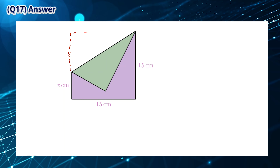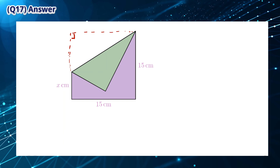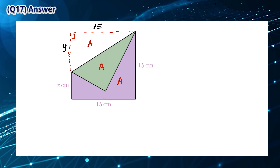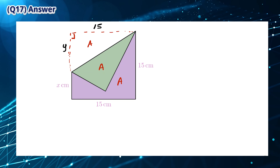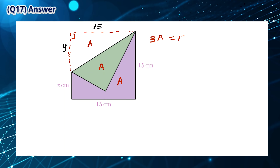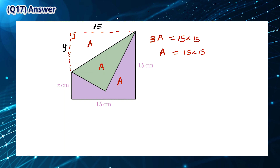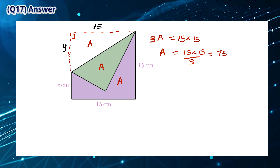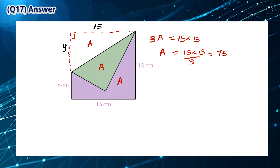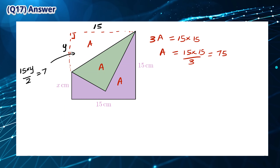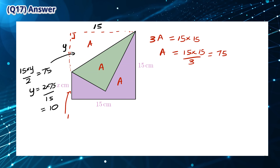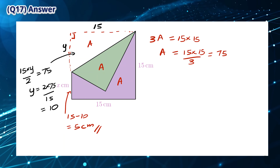Let's draw the rest of the square. We can divide the square into 3 equal areas, each marked as A. The area of the entire square is 15 multiplied by 15, so each area A is equal to 15 × 15 divided by 3, which is 75. Letting the height of triangle A be equal to Y, we can solve to find Y equals 10 cm. This means X is equal to 5 cm. The answer is A.